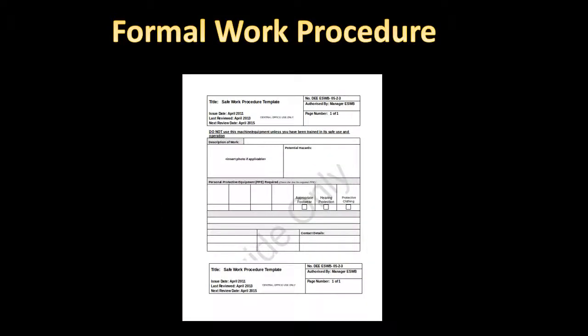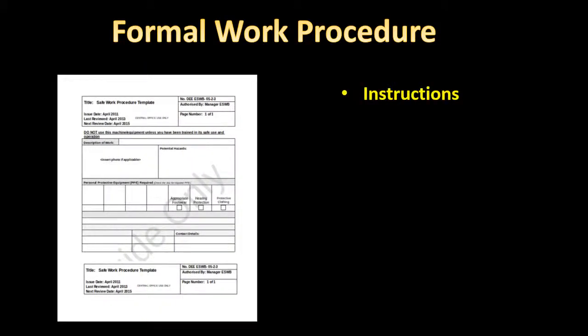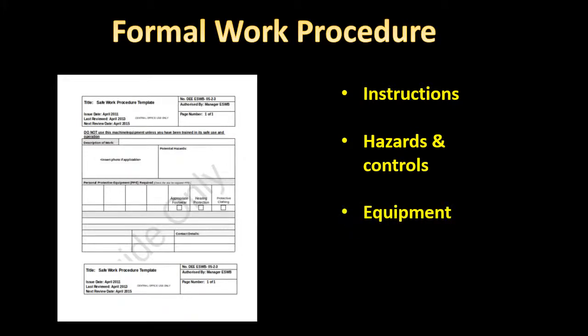Where possible, formal work procedures should be followed in carrying out routine tasks. This ensures the work is carried out in a safe manner with a consistent outcome. The information contained within a formal work procedure should include the instructions for carrying the job out correctly and safely, any hazards associated with the job and how to prevent injury, any equipment to be used and how to use it correctly, and what to do if an incident occurs.